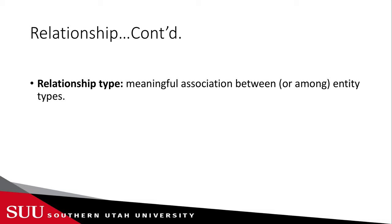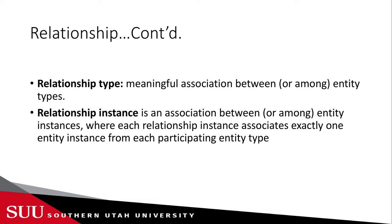Just as we have entity types and entity instances, we also have relationship types and relationship instances. The relationship type is a meaningful association between or among entity types, while the relationship instance is an association between or among entity instances, where each relationship instance associates exactly one entity instance from each participating entity type. Let's look at an example that will clarify things.